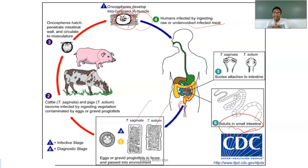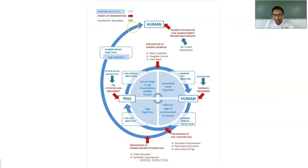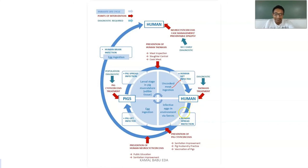When human beings then consume the infected animal meat in raw or undercooked form, the cycle continues and the human becomes infected again. In the life cycle diagram, the blue line indicates the parasitic life cycle, the red line indicates points of intervention, and light blue indicates diagnostic material. Humans become infected through ingestion of uncooked meat, after which the organism settles in the small intestine and lays eggs, which are excreted through feces into the external environment.